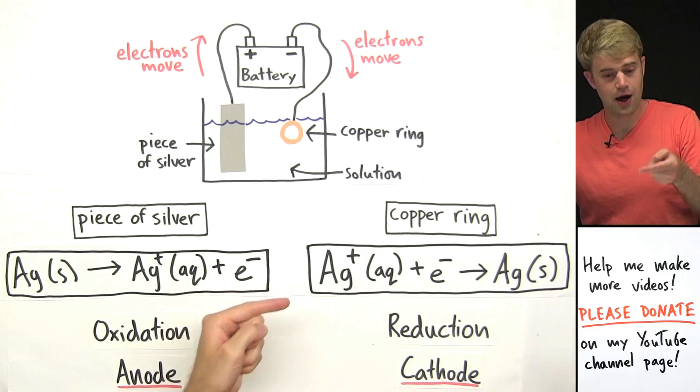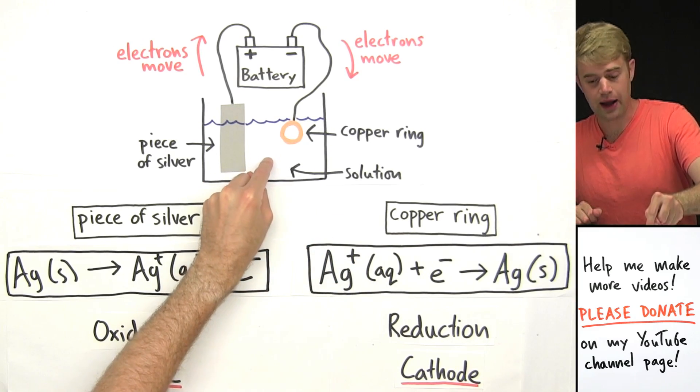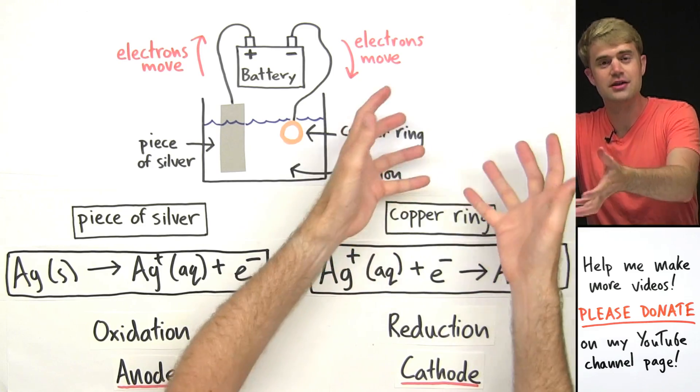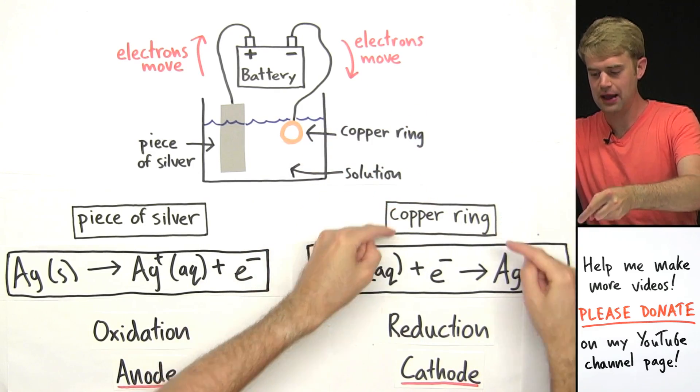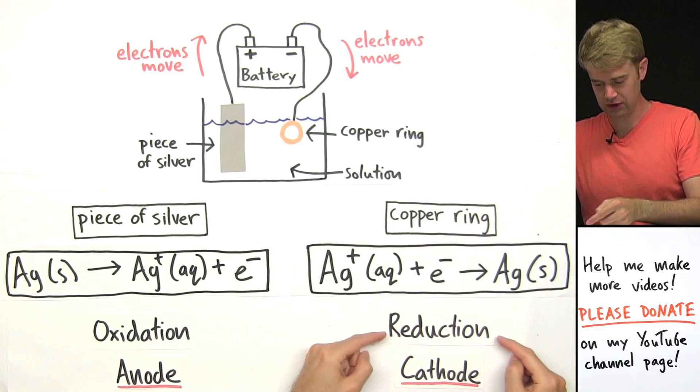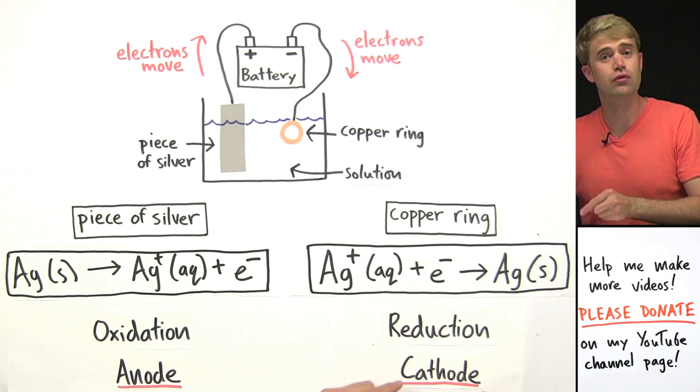Then over here on the copper ring, these Ag1 plus, the silver ions, get electrons added to them, they gain electrons, so the copper ring is where reduction, gain of electrons is happening and we can call it the cathode, the site of reduction.